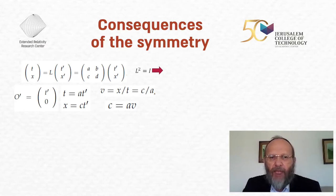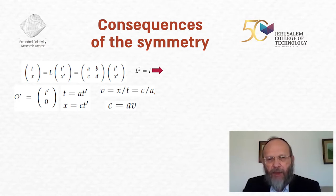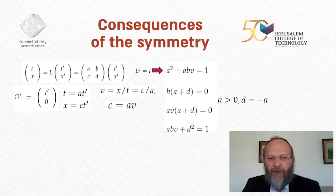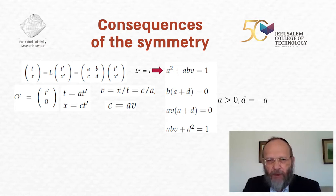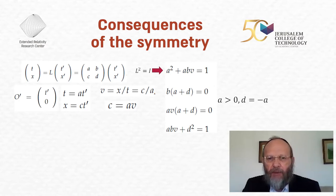From causality, time intervals positive in one system must be positive in the other, so A must be positive. From the equation A + D·V = 0 with V nonzero and A positive, we get D = −A. We already know C = A·V. Taking A outside gives a cleaner form. We now consider two cases. Case one: B = 0. Then A squared = 1, and since A is positive, A = 1 and D = −1. This yields exactly the Galilean transformations — one of two possibilities.